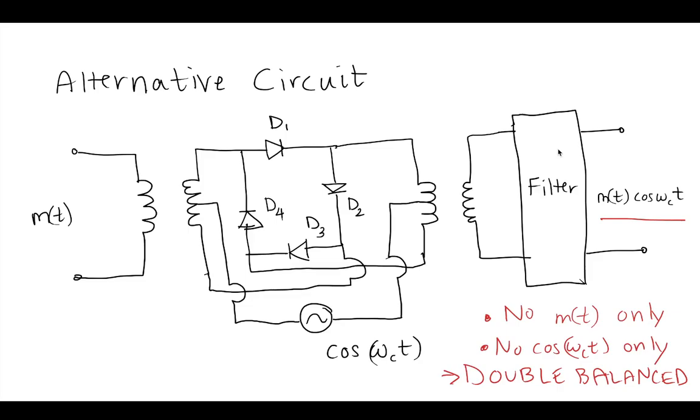Now, what we should notice here is that we do not have any terms that are the message only, or some coefficient times the message, and we also don't have any terms that are the cosine wave by itself or some cosine wave multiple only, which means that both the message and the cosine wave have been removed here at the end, and we will call this a double balanced modulator. So this ring modulator is a double balanced modulator.